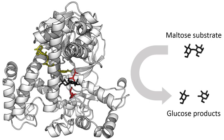Enzymes are not rigid, static structures; instead they have complex internal dynamic motions — movements of parts of the enzyme's structure such as individual amino acid residues, groups of residues forming a protein loop or unit of secondary structure, or even an entire protein domain. These motions give rise to a conformational ensemble of slightly different structures that interconvert with one another at equilibrium. Different states within this ensemble may be associated with different aspects of an enzyme's function. For example, different conformations of the enzyme dihydrofolate reductase are associated with the substrate binding, catalysis, cofactor release, and product release steps of the catalytic cycle.